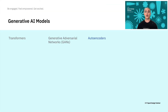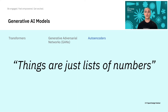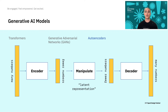Let's talk about autoencoders now. The whole premise of autoencoder models is that things are just lists of numbers. Here's what it looks like — on the left, we have a long yellow rectangle, which is a thing represented by a long list of numbers.